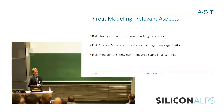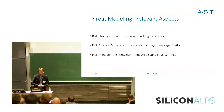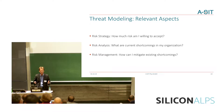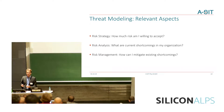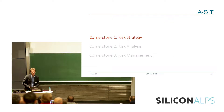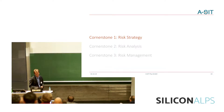These are the three relevant aspects I want to go into more detail on now. In the remainder of this talk we will cover risk strategy — how much risk am I willing to accept — then risk analysis — what are the current problems of my organization — and then risk management — how can I get rid of these problems in the best case. These are the three cornerstones we will now go through in more detail.